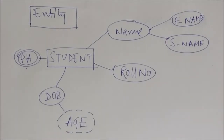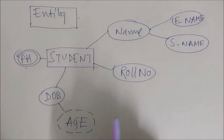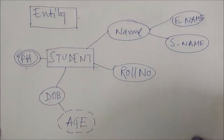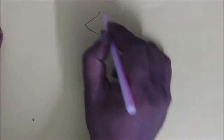These are the notations about entities and attributes. Next is relationships. Relationships are represented by a diamond shape box.